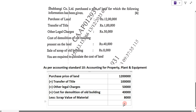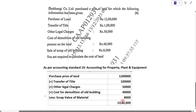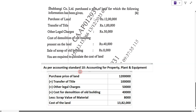So the remaining amount we get is Rs. 13,82,000. This is the cost of the land as per Accounting Standard 10.